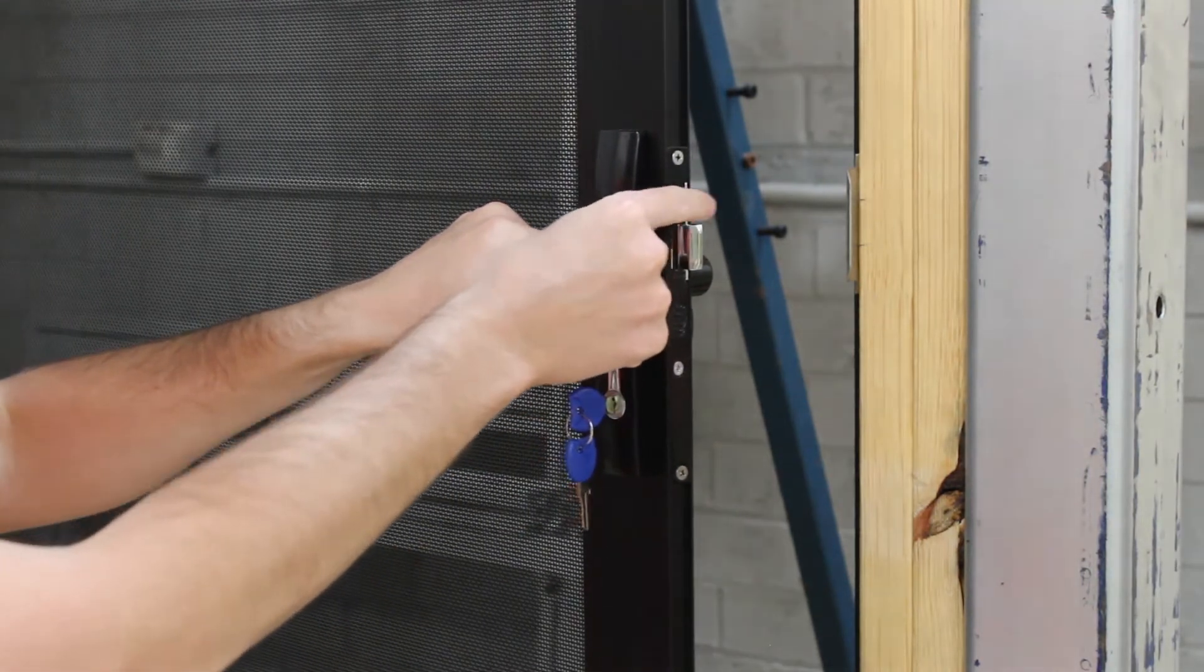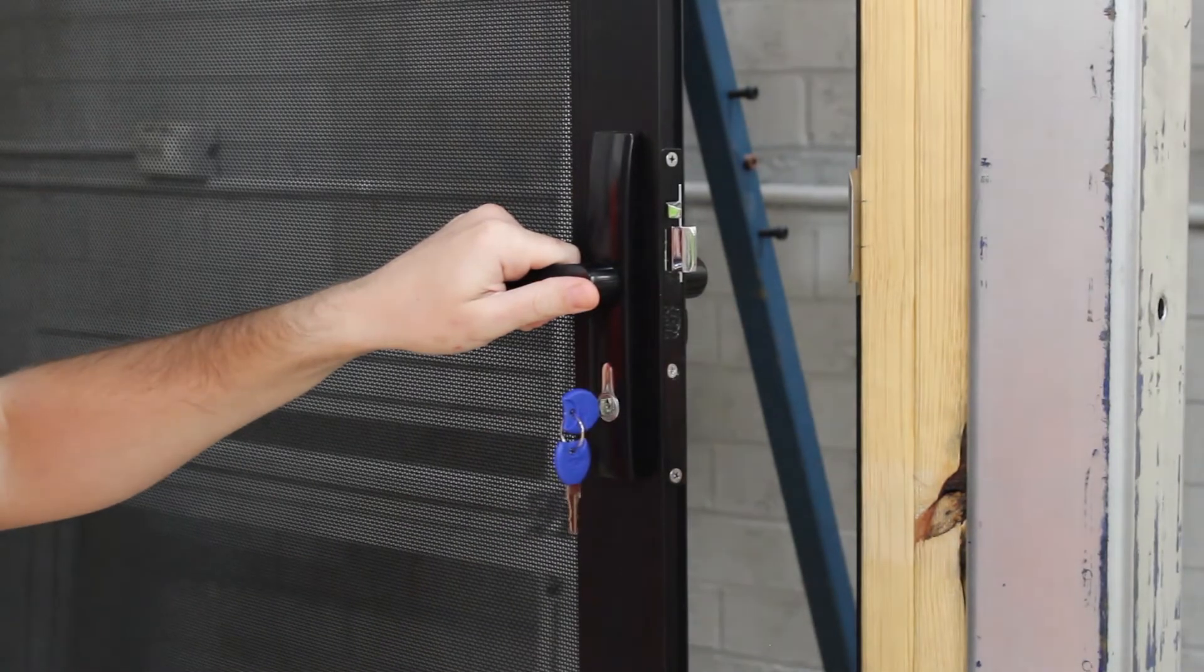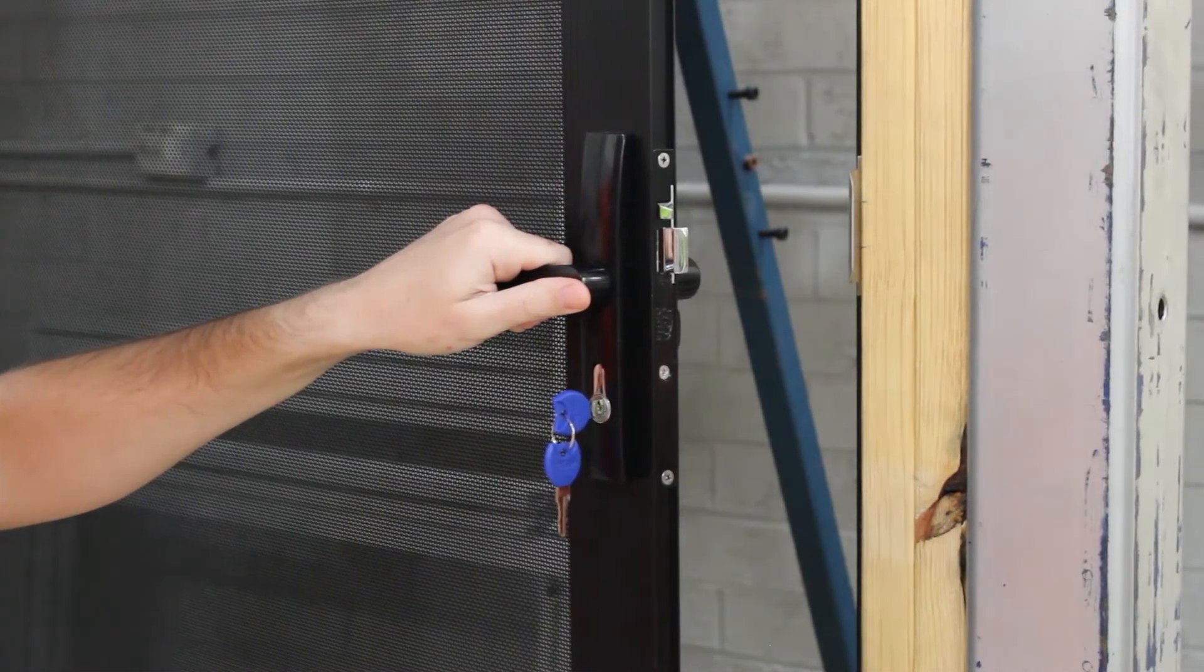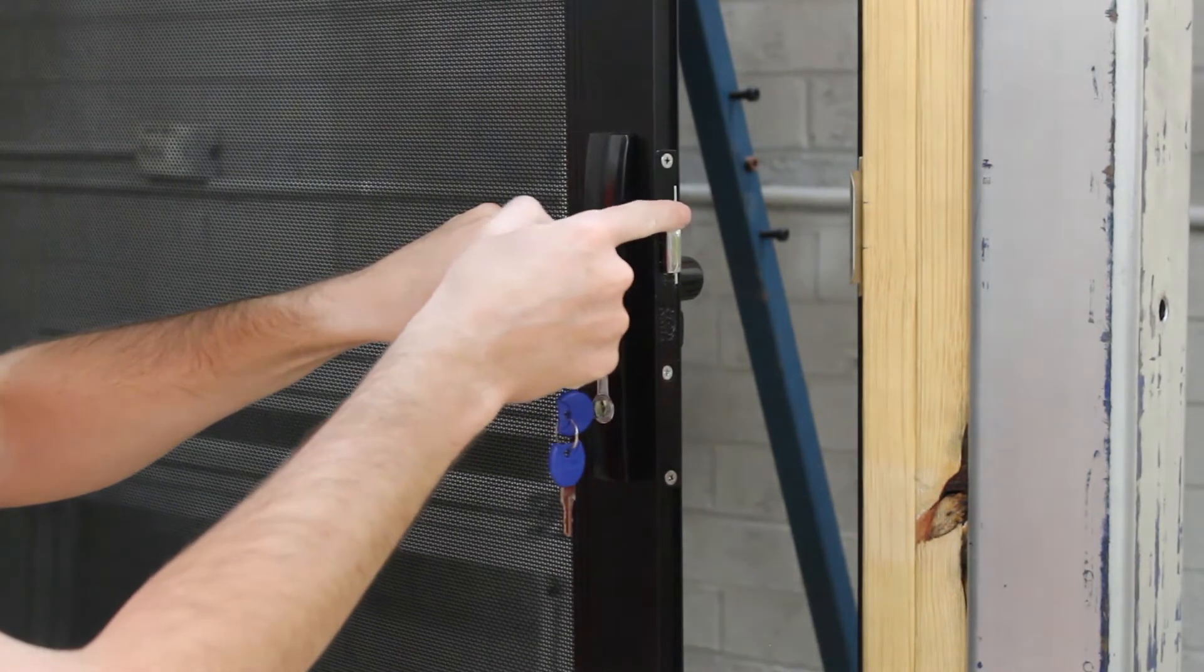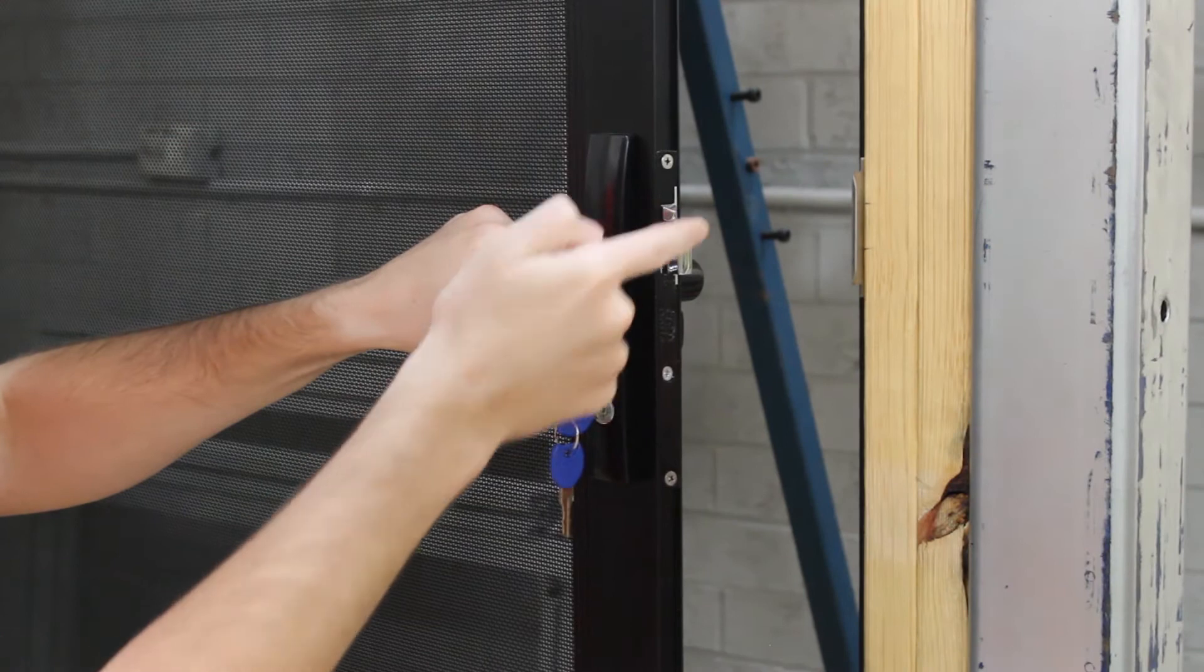Once the door is open, press on the trigger and the tongue will extend. From there, we will activate the handle a few times. This ensures the lock and handle is working. Always remember to push the tongue in after each operation.